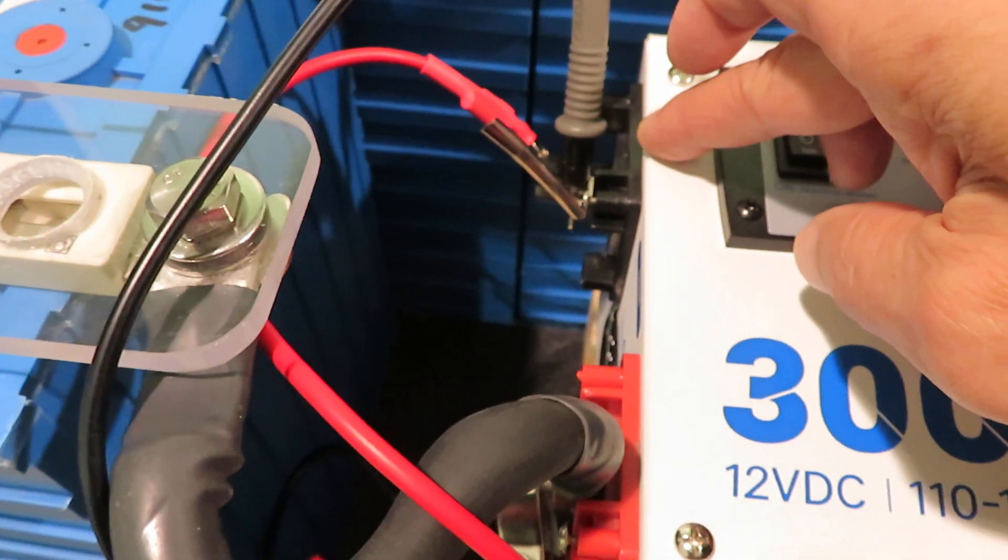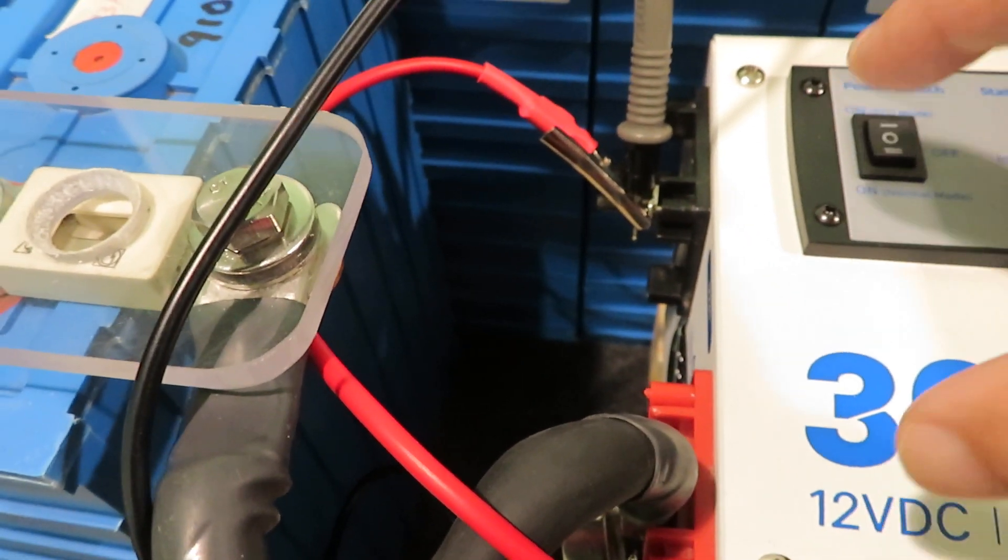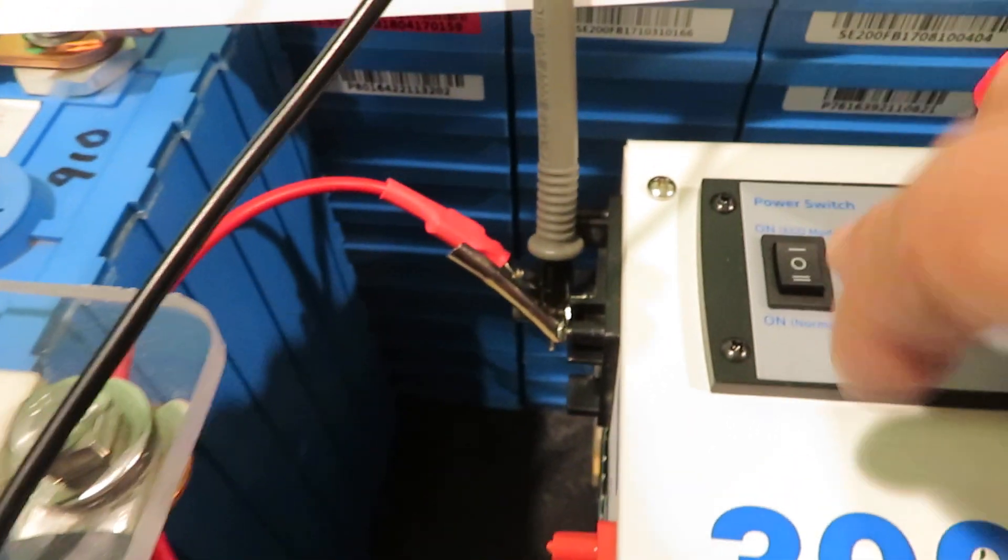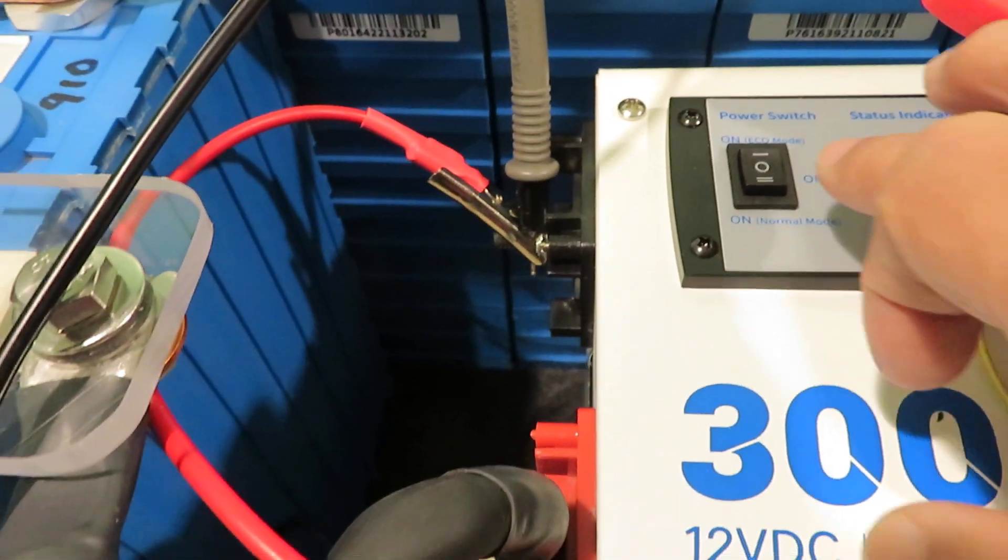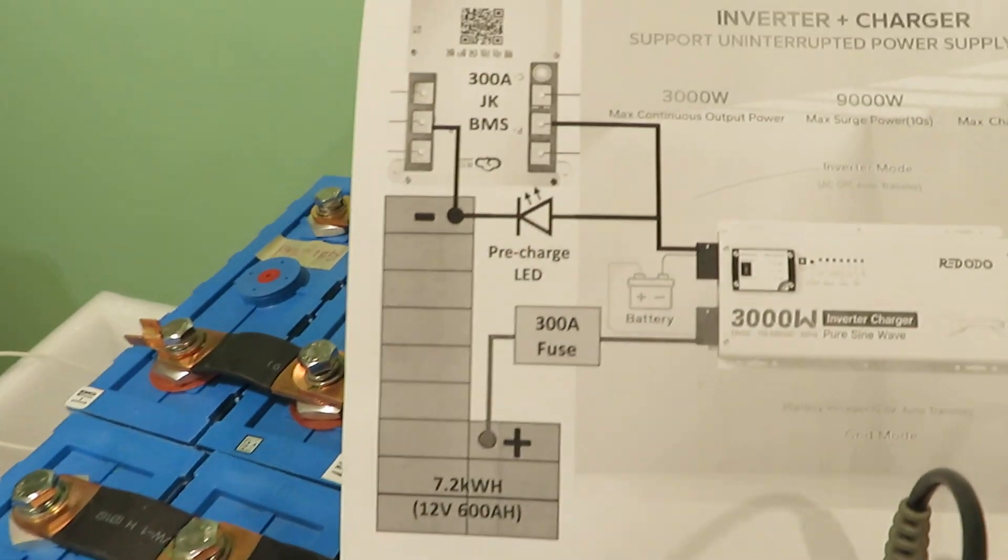This is the negative and this is the positive 12 volt. It will act like a short circuit even though the inverter is off. So what I tried to overcome the problem...